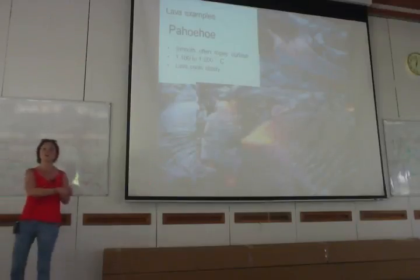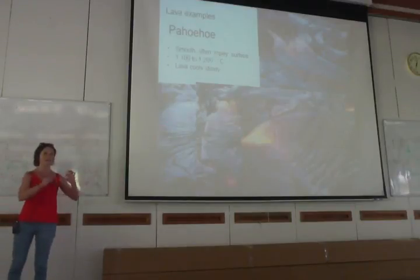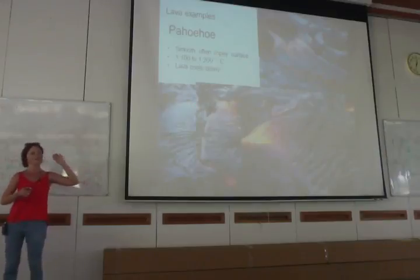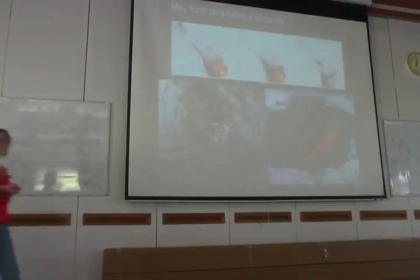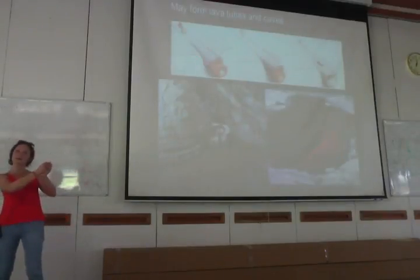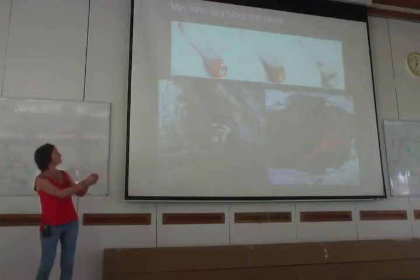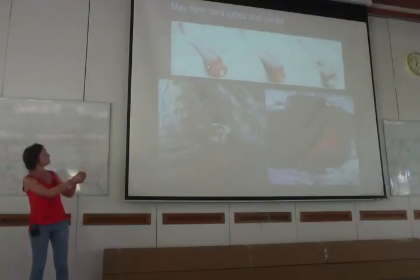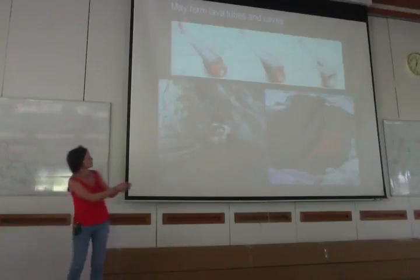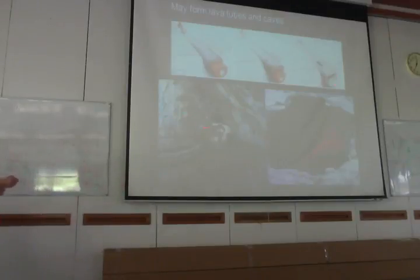These lava flows, when we see them as solidified rocks, tend to have a lot of vesicles — trapped gas bubbles — because the skin prevents gases from escaping. The gases stay within the lava when it solidifies. Pahoehoe flows also produce really distinctive features like lava tubes or lava caves. These form when the edges of a pahoehoe lava flow cool more quickly than the inside, creating a solid crust. Lava continues flowing through this tube until the source runs out, leaving behind a nice tube structure.